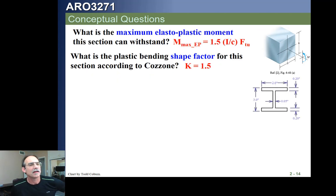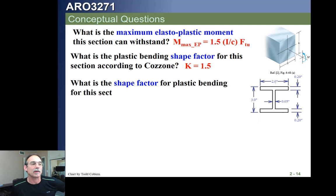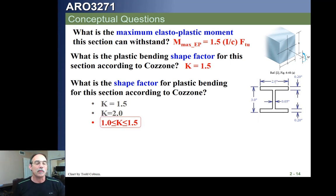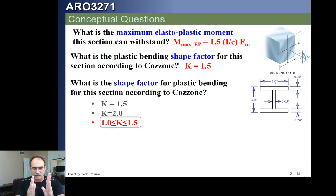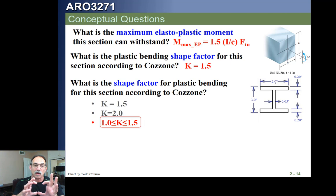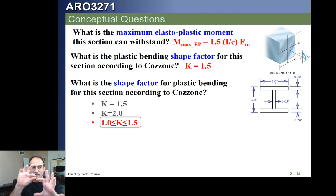Let's try a new question. Given an I-section, what's the shape factor for Cozzone? It is an I-section, meaning it's somewhere between 1.0 and 1.5. The wider the web is — the stubbier the section — the closer the factor gets to 1.5. When it's so stubby it's a rectangle, it's 1.5. As it becomes more hourglass-shaped, the factor gets smaller. If the web is completely skinny and the flanges are really wide and thin, that would be close to 1.0.